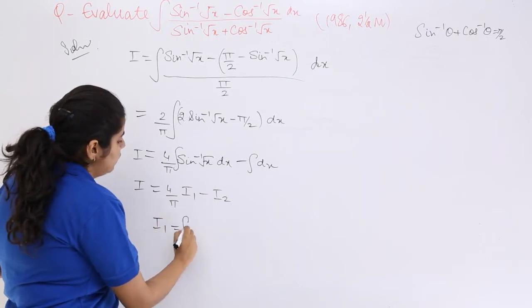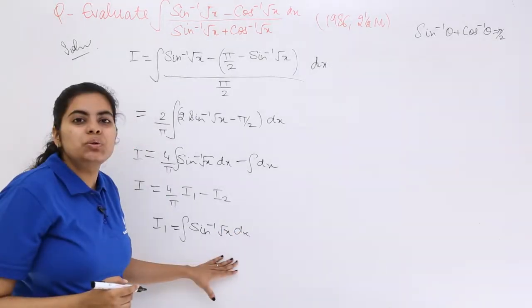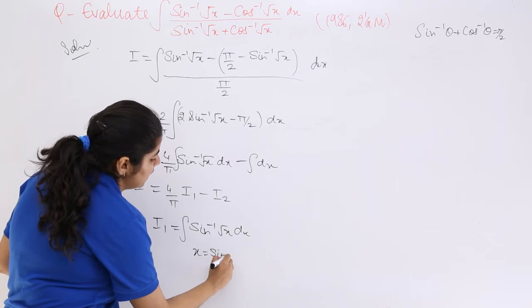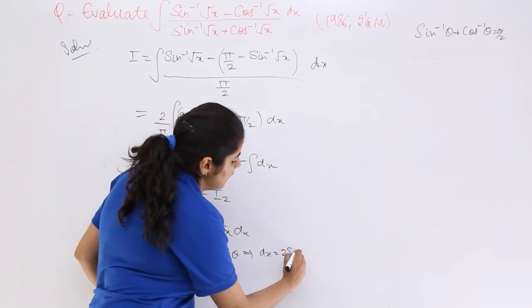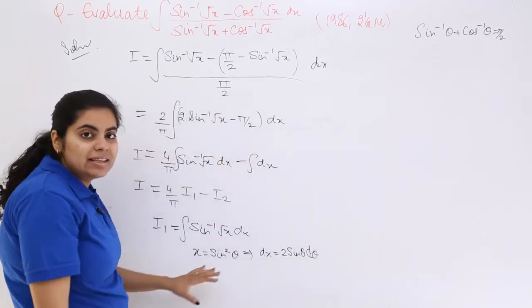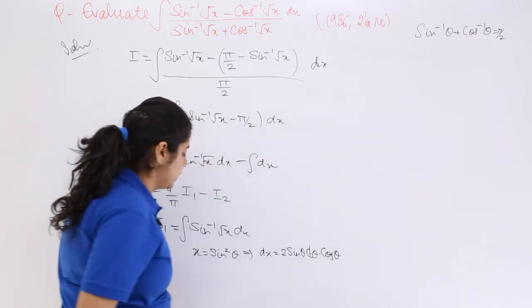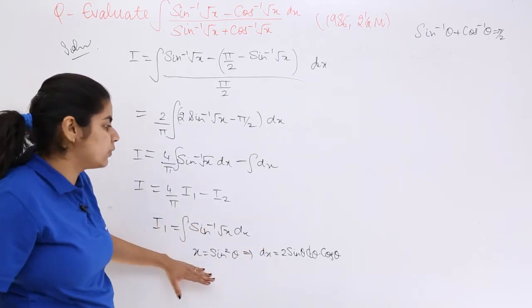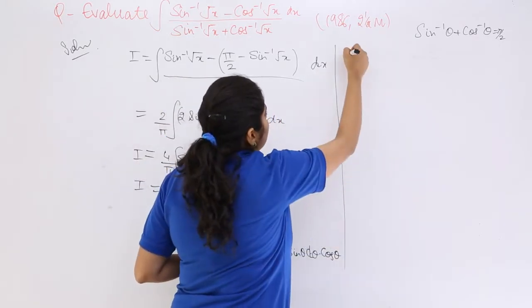Now that you can see I have I1. So I1 equals sin inverse root x dx. Let me substitute. I write: let x equals sin squared theta. Then I have dx equals 2 sin theta cos theta d theta. I know that dx has some value and x has some value.